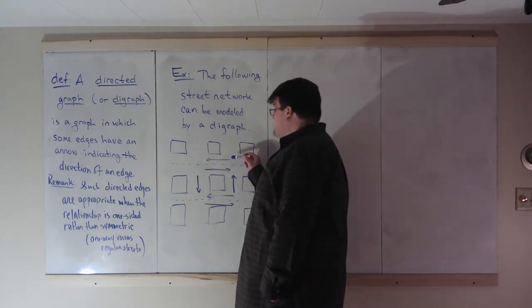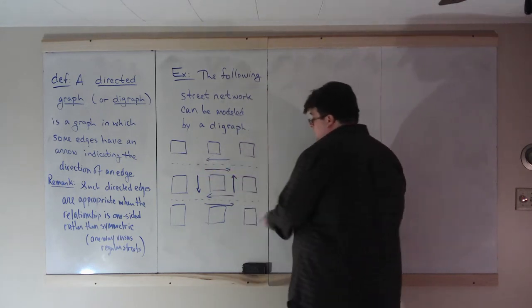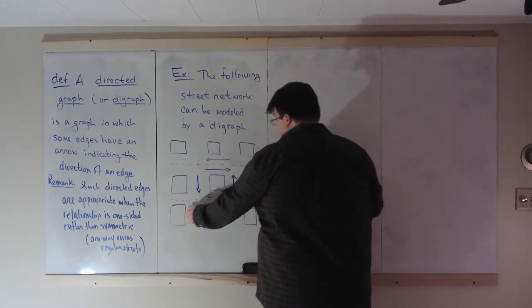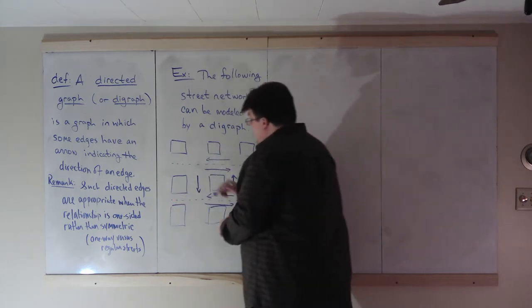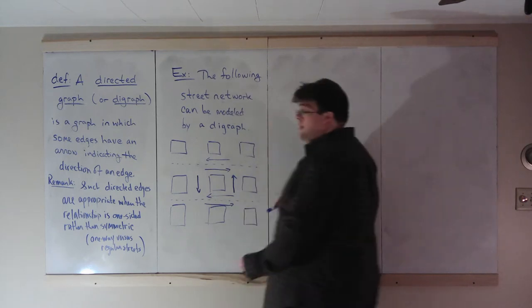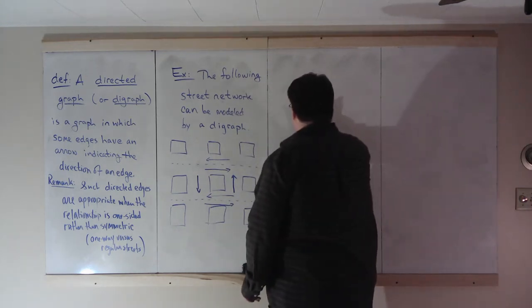So up here we have a two-lane road. One going this way, one going that way. Here we have another two-lane road. Here we have another two-lane road. One going that way, one going this way. But connecting them, we have two one-way roads.